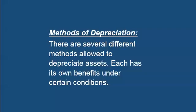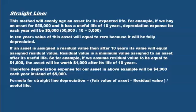There are several different methods allowed to depreciate assets, each with its own benefits under certain conditions. The straight-line method will evenly age an asset over its expected life. For example, if you buy an asset for $50,000 with a useful life of 10 years, the depreciation expense for each year will be $5,000. You get this by dividing $50,000 by 10, which equals $5,000 per year.